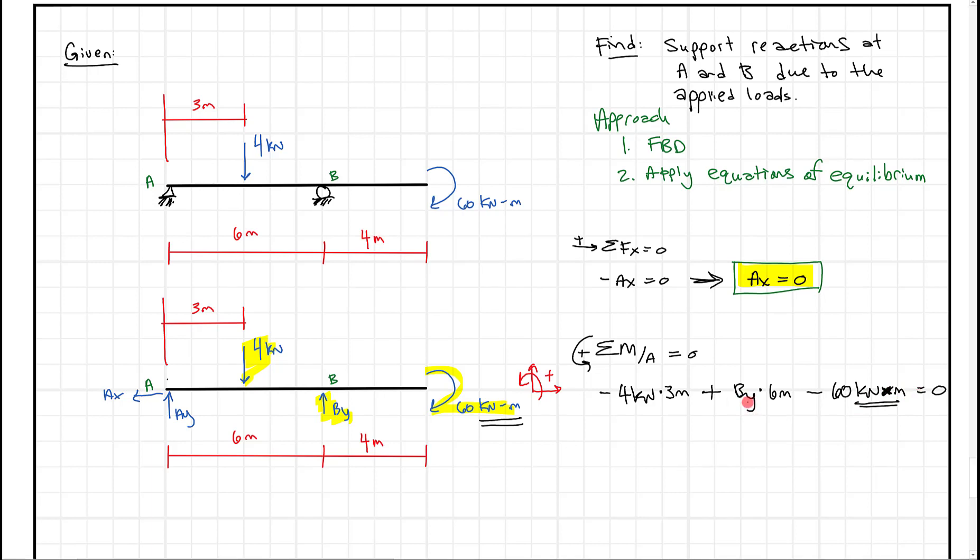So once we know that, we only really have this one unknown BY left. And we can go ahead and solve for it. So let's do that. Because basically what we're going to get here is we're going to get BY times 6 meters has to equal, well, if I put this 4 times 3 on the other side, I get 12 kilonewton meters. And if I put the 60 kilonewton meters on the other side, I get plus 60 kilonewton meters. And what we know is when we add all that up, divide it by 6, we get a value of 12 kilonewtons. So that is our answer. That's our answer for BY. We can put a box around it. And that's where we go, okay?